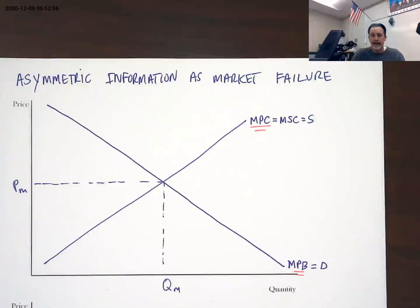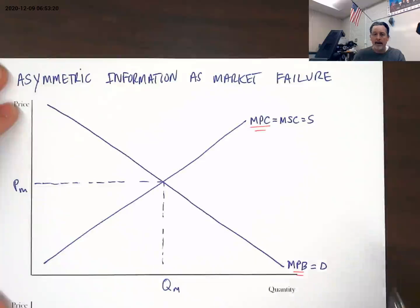The classic examples of asymmetric information market failures are things like used cars. The seller of the used car has much more information about what has happened with that car over the course of time—the service history, has it been in an accident, have there been problems that have not had insurance claims filed, things along those instances.